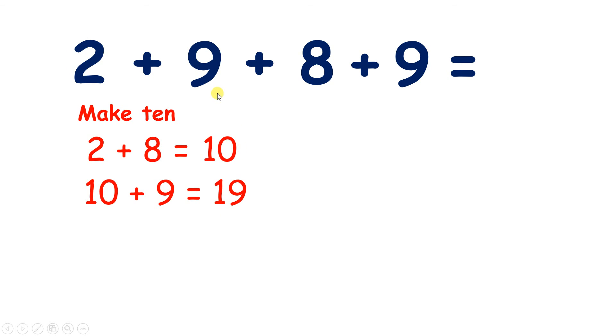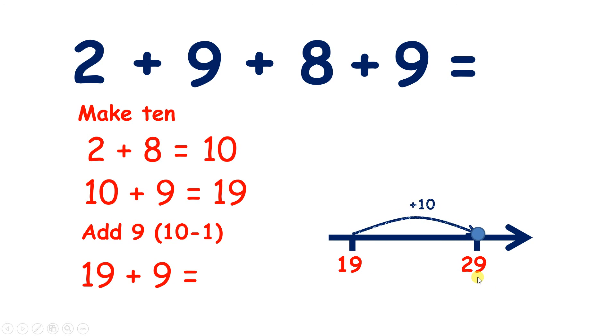And we have 1 more 9 to add. So 19 plus 9. And to add 9 we know that we can add 10 and then take away 1. So starting on 19 we can add 10 to make 29, and then subtract 1 to give us 28.